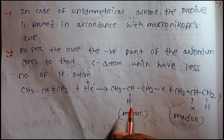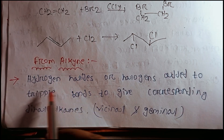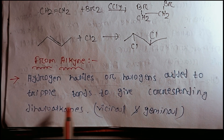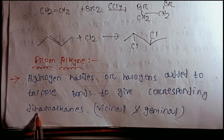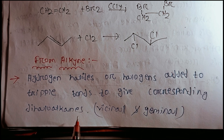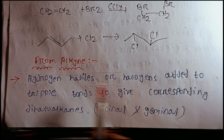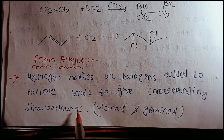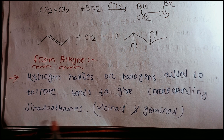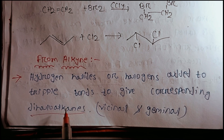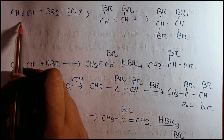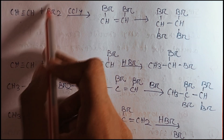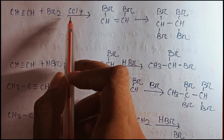Hydrogen halide or halogen adds to triple bonds to give the corresponding dihalo alkane. So we can use hydrogen halide or halogen so that the triple bond gives dihalo alkane. We have a triple bond in an alkyne, and we have halogen in this cell.